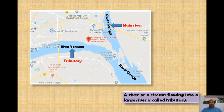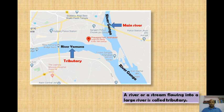In the middle course, we can also see a tributary. A tributary is a river or stream flowing into a larger river. For example, river Yamuna is the tributary of river Ganga, because river Ganga is the main river into which river Yamuna flows and meets, near Prayagraj Fort of Allahabad.